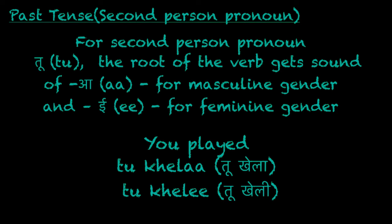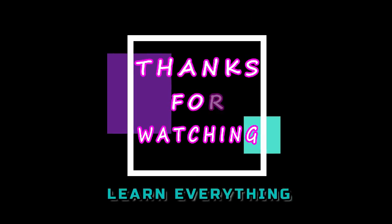Now sometimes 'tu' is also used as a second person pronoun. In that case, the root of the verb gets an 'a' sound at the end for masculine gender and 'e' for the feminine. For example, 'you played' — tu khela for masculine gender, and tu kheli for feminine.